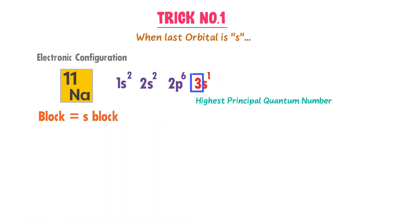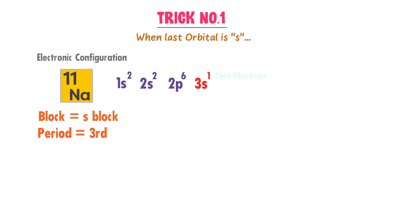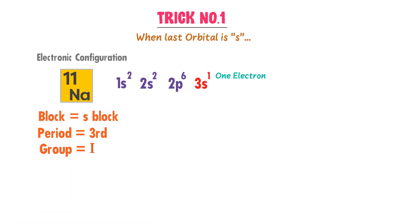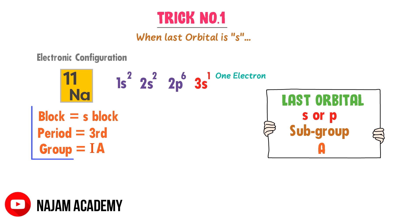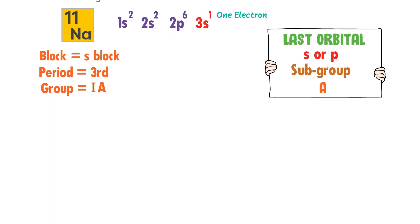The highest principal quantum number is 3, so the period of sodium is 3rd. There is only one electron in the last S orbital, so the group number of sodium is 1st. Also remember that if the last orbital is S or P, the subgroup will always be A. The last orbital of sodium is S, so its subgroup is A. Hence sodium is an S block element — it is present in the third period and first A group.